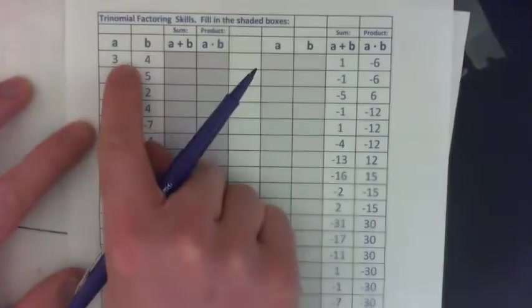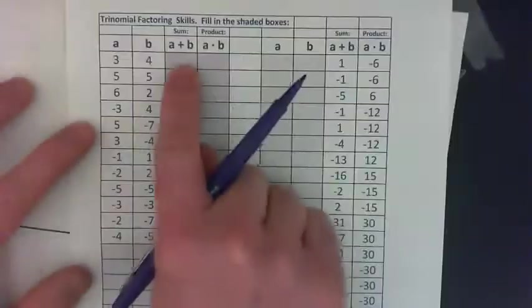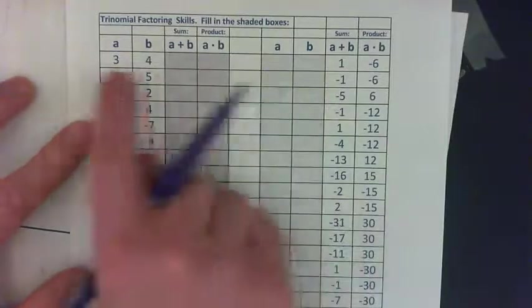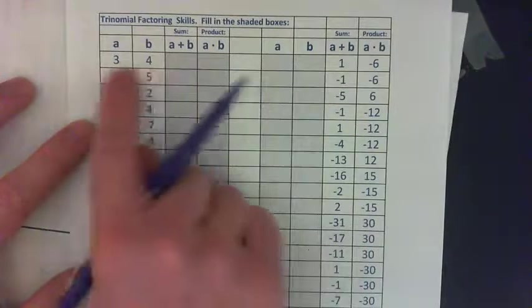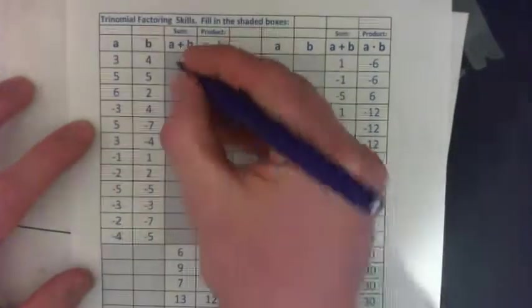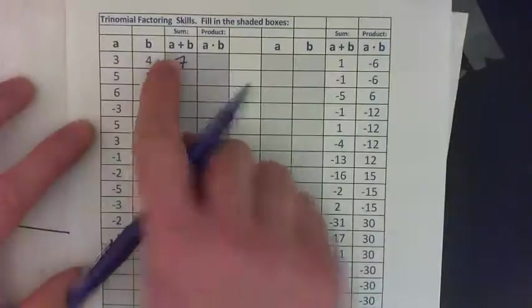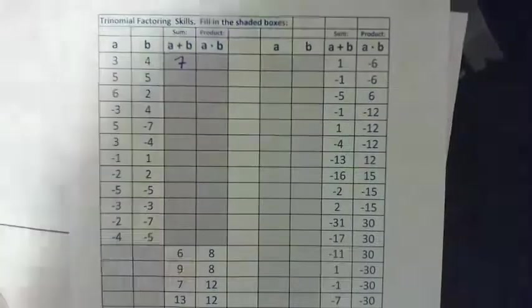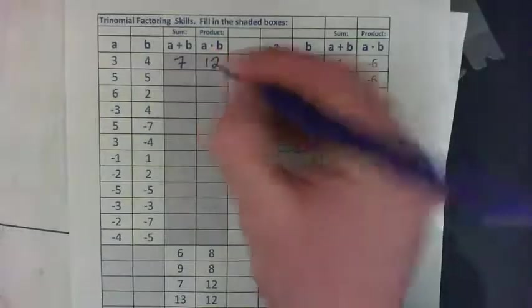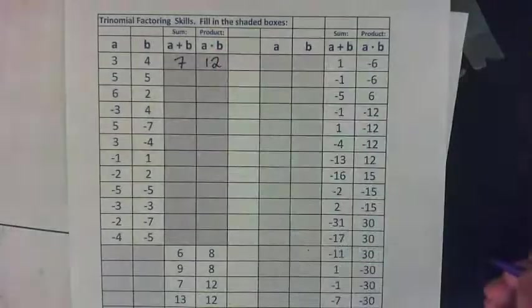A is 3, B is 4. We have to figure out what A plus B is and then what A times B is. So A plus B is 3 plus 4, which is 7 — write 7 there. A times B is 3 times 4, which is 12.